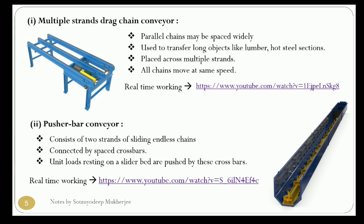The multiple strand drag chain conveyor consists of parallel chains spaced widely up to a few meters apart. It is used for transferring long objects like lumber, hot steel sections, etc. You can see the real-time working of this type of conveyor through the link given in the comment section.